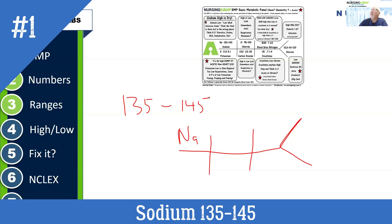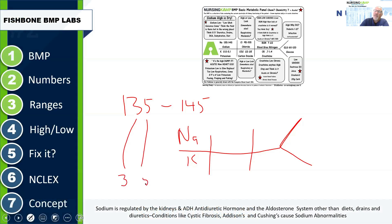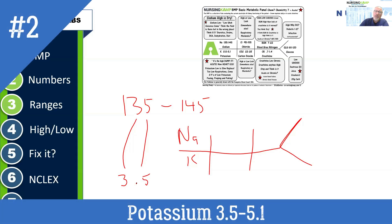Sodium is the only lab you truly need to memorize. Once you have that memorized, you move to potassium. Take down the three, you have three, then take down the five — that's 3.5, the low range. Then you take down the five and the one — that's 5.1. So a potassium range is 3.5 to 5.1 milliequivalents. NCLEX is just going to give you a range and they're very selective about the ranges they test.